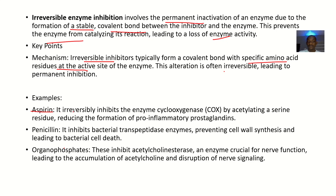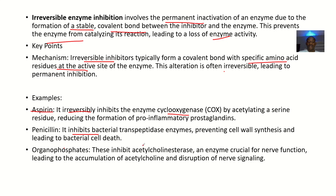For examples: Aspirin irreversibly inhibits the enzyme cyclooxygenase by acetylating a serine residue, reducing the formation of pro-inflammatory prostaglandins. Penicillin inhibits bacterial transpeptidase enzymes, preventing cell wall synthesis and leading to bacterial cell death.